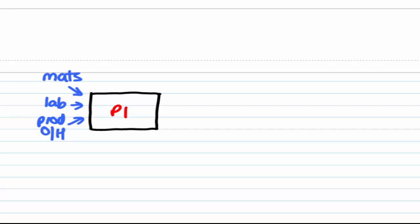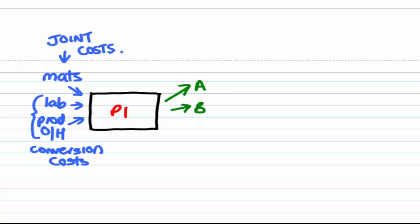Now the labour and production overheads are sometimes grouped together and called conversion costs. We're also going to refer to these costs as joint costs. Now out of this process, let's just say we get three products: Product A, Product B, and Product C. And possibly we might be able to sell these products in this state.